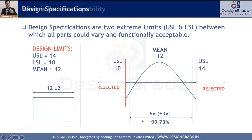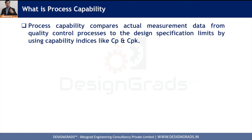Process capability compares actual measurement data from quality control processes to the design specification limits by using capability indices like Cp and Cpk. In our example, the Lower Specification Limit is 10, the Upper Specification Limit is 14, and the mean is 12.